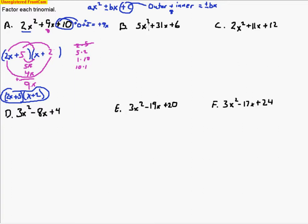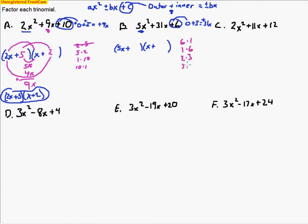Next: 5x² + 31x + 6. That plus 6 tells us right away outer and inner are adding together to equal 31x. We draw two sets of parentheses and put in 5x and x — the only numbers that make 5x squared. We know both signs are positive because they make a positive 31x. Now we need numbers that multiply to make 6: we can try 6 and 1, 1 and 6, 2 and 3, and 3 and 2 — only four options. We try them all until we find the one that works.